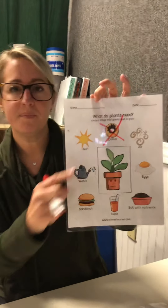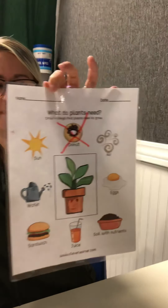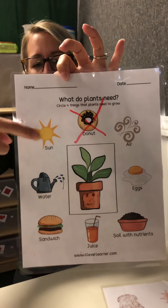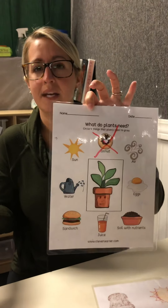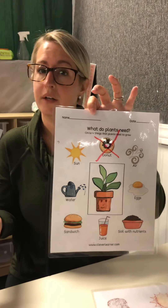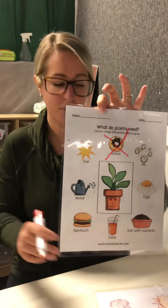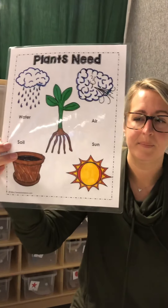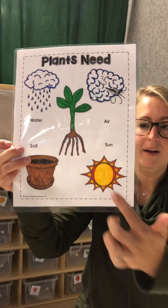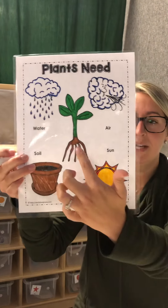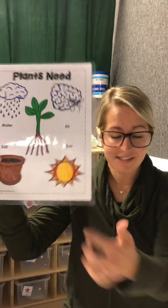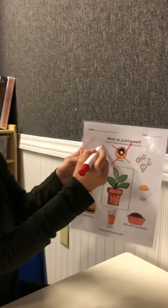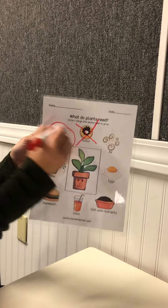Our next one is the sun. Point to the sun — good work! Does a plant need sun to grow? Let's look at our sheet. Do you see the sun? There it is. So does a plant need sun? Yes, it does. So we are going to circle the sun because the plant needs the sun.